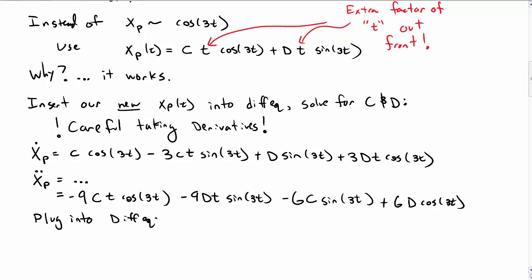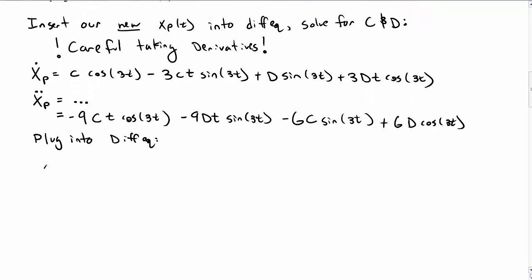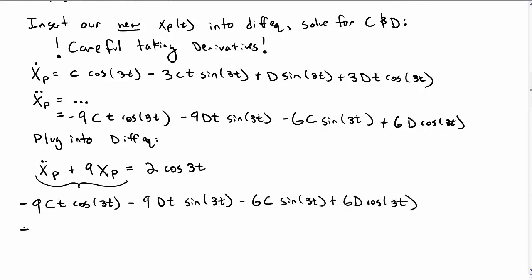So now we're going to plug this into the differential equation, the inhomogeneous differential equation, which was x double dot plus 9x equals 2 cosine of 3t, and we're going to solve for what C and D values make this true. So plugging in for the second derivative, there's the second derivative.